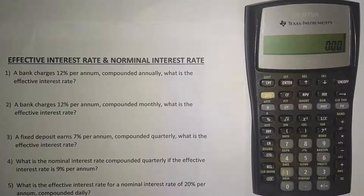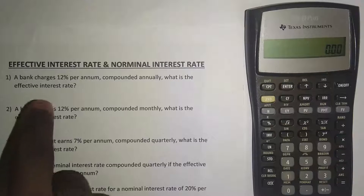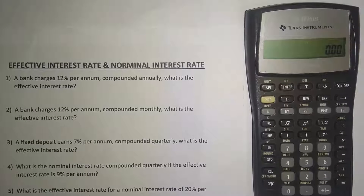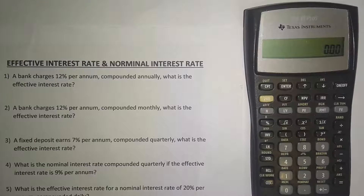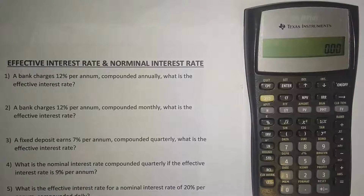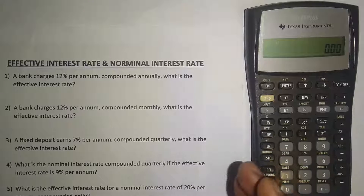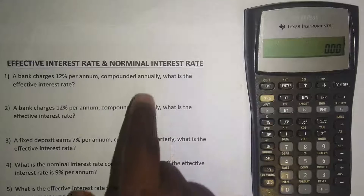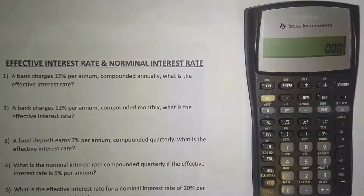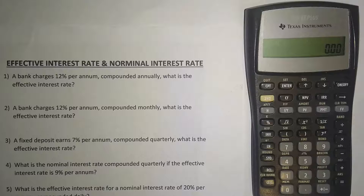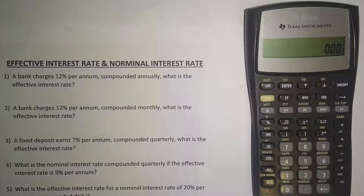We have a few examples here to go through. The first says a bank charges 12 percent per annum compounded annually — what is the effective interest rate? The effective and nominal interest rates will be exactly the same if compounded annually. However, if there is more than one compounding per year, they will differ, and the effective rate will always be higher than the nominal.